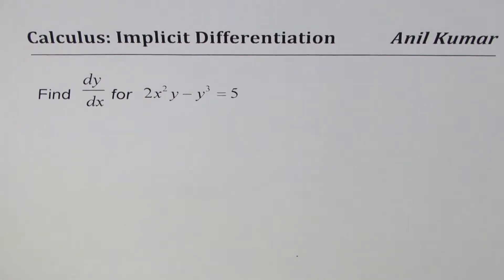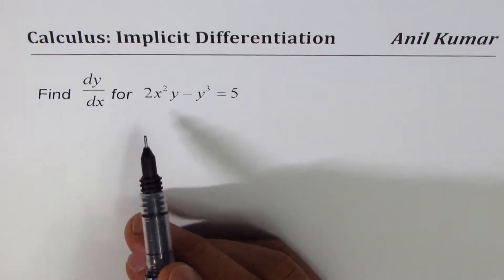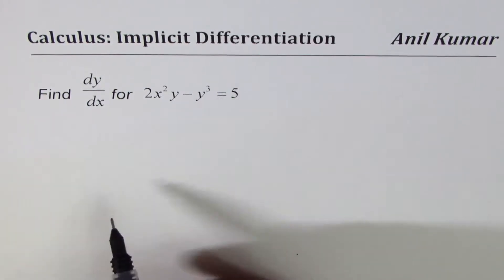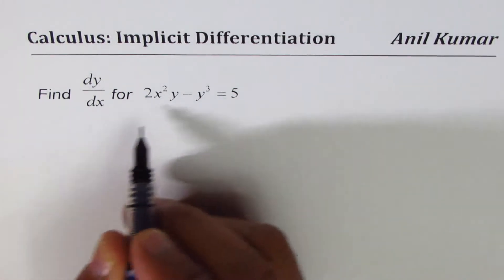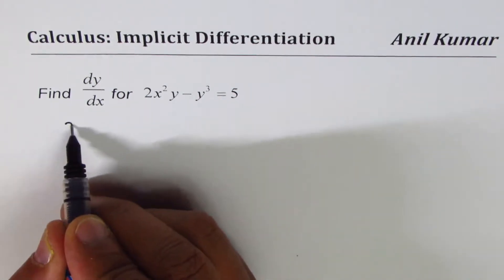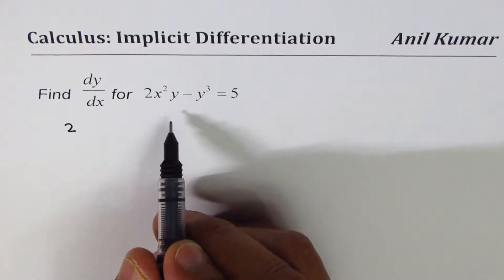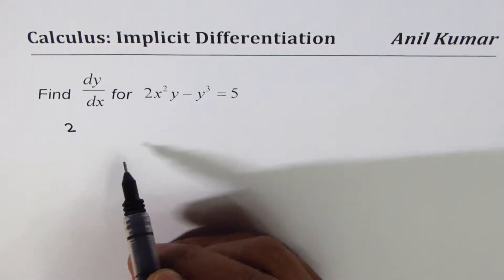I'm Anil Kumar, sharing with you a practice question on implicit differentiation. Find dy/dx for 2x squared y minus y cubed equals 5. In this type of equation, it is very difficult to isolate y, so we can straight away do implicit differentiation and find dy/dx.